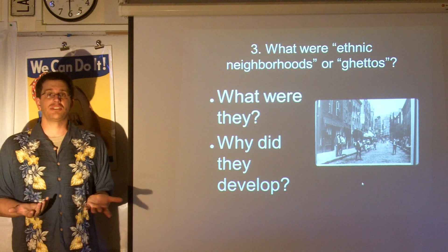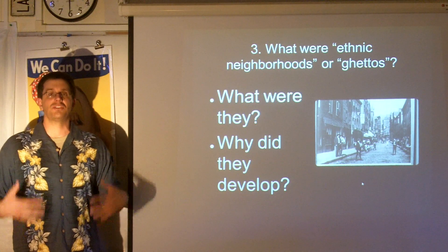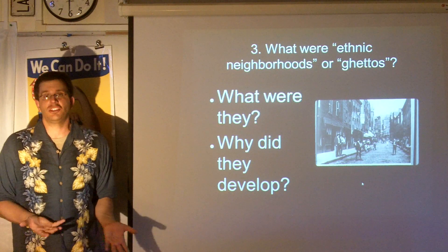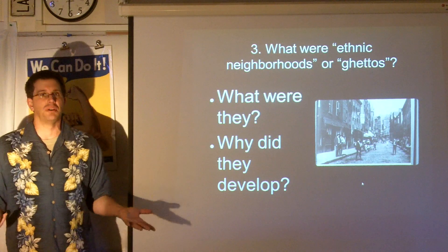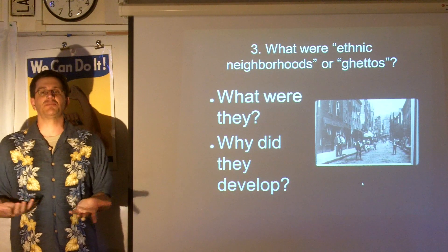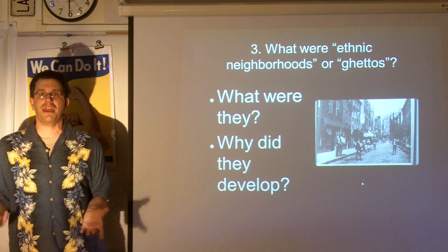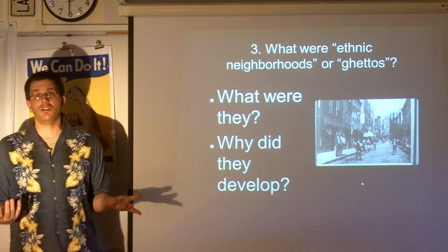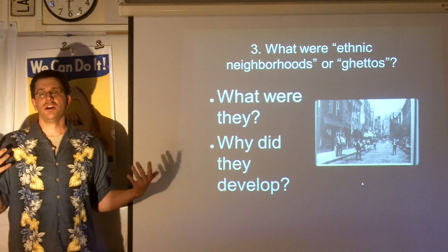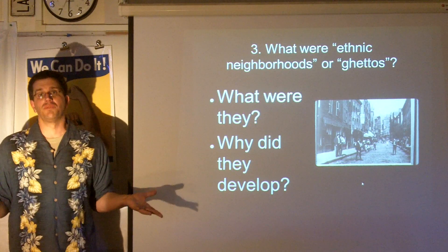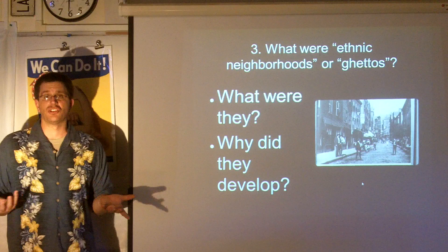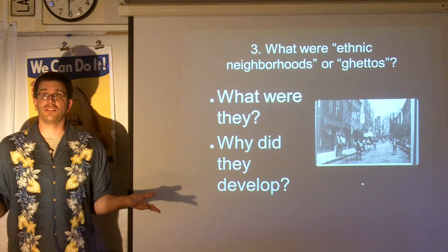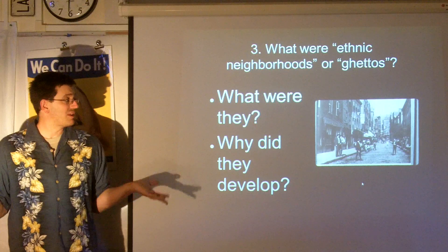They settled into these dense apartment complex neighborhoods where they didn't even need to speak English, because they could speak the language of the country where they were from. These tenements became inexpensive places where they were crowded and packed in, but where they could also have some elements of life they'd left at home — certainly access to food and people from where they'd come from — sort of transitional zones where they would live until they were better accommodated in life within the United States.